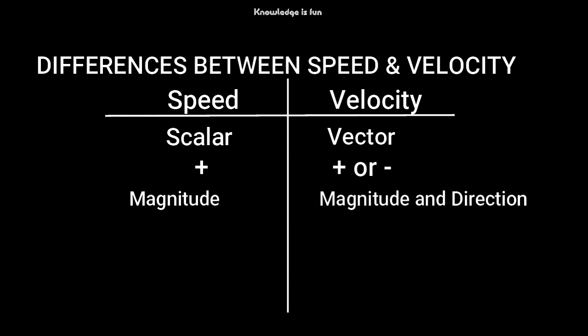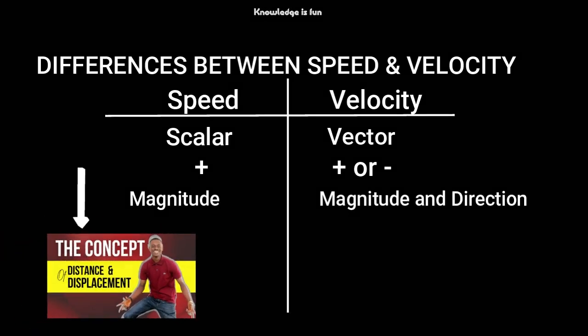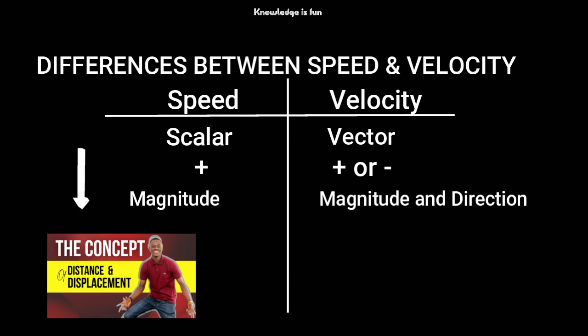Speed has magnitude only, while velocity has both magnitude and direction. In a previous video I explained very well the meaning and difference between scalar and vector quantities, so you can watch that video to understand better.